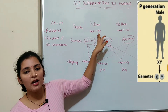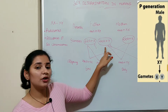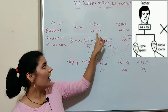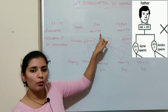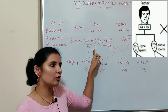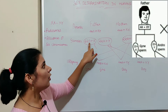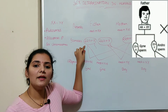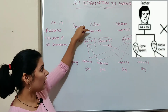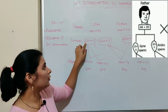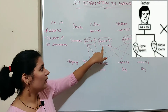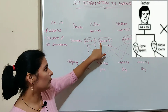Since males have two different types of sex chromosomes, during spermatogenesis they produce two different types of gametes. As you can see in this diagram, this is the genotype of a male having 44 autosomes and X and Y sex chromosomes. During spermatogenesis, one sperm receives 22 autosomes plus X chromosome, because gametes are haploid — they receive half the number of chromosomes. So half of 44 is 22, so it receives 22 autosomes plus one sex chromosome, say X.